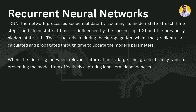When training the recurrent neural network, sequential data is processed by updating the hidden states at each time step. The hidden state at time t is influenced by the current input x_t and the previous state t-1. Issues arise when back propagation happens and gradients are calculated and propagated through time. When the time lag between relevant information becomes too large, the gradient becomes so small that long-term dependencies are lost.